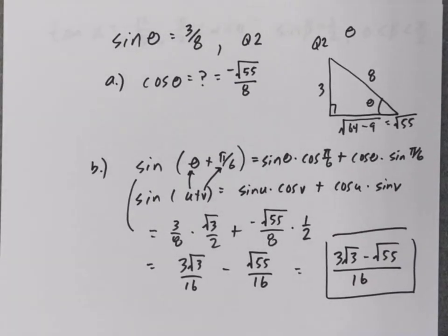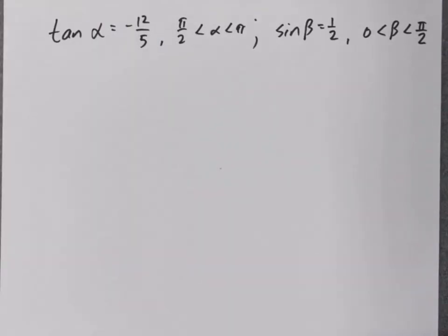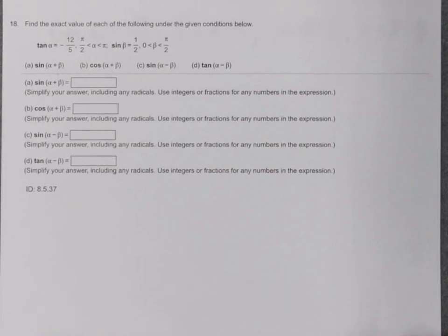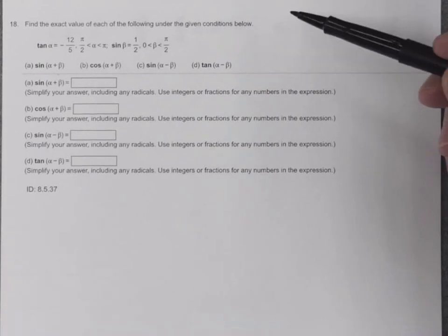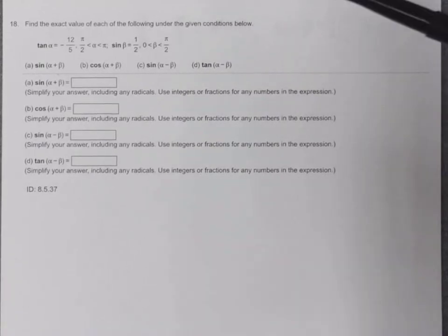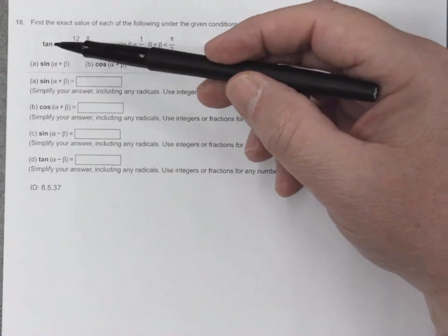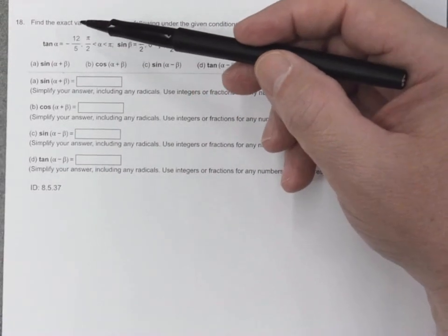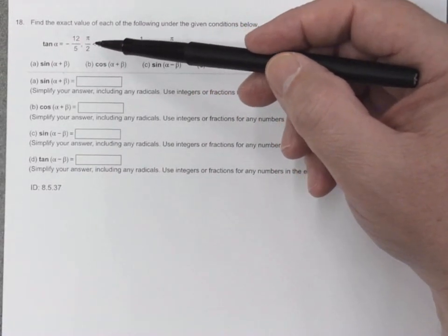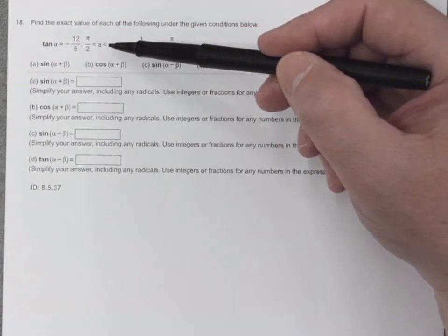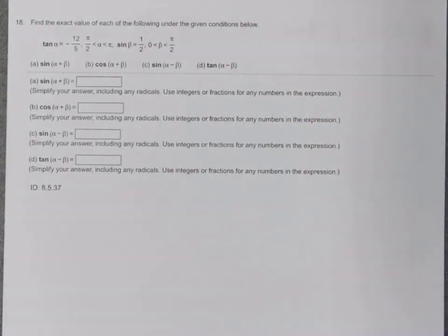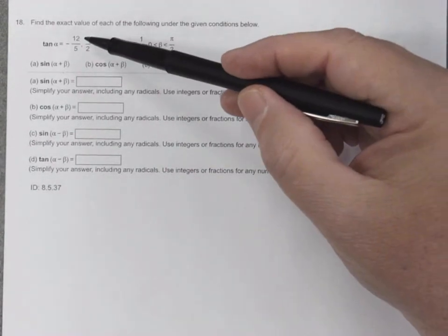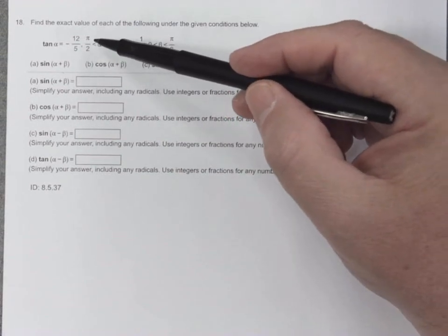Let me look at one more problem. It's a little different and involves a fair amount of work. They say: find the exact values of each of the following given the conditions. Tangent of alpha equals negative 12 over 5, and alpha is between pi over 2 and pi — that tells you alpha is in the second quadrant, since alpha is larger than pi over 2 but less than pi.